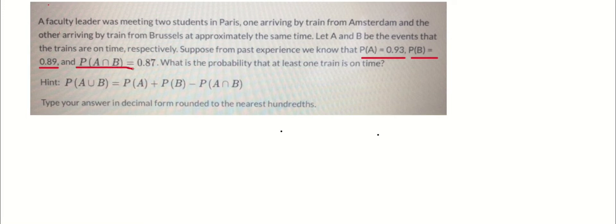The question says, what is the probability that at least one train is on time? We can see from our hint that we would need to find the probability of A union B, which is equal to the probability of A plus the probability of B minus the probability of A intersect B. So let's get right into solving our problem.